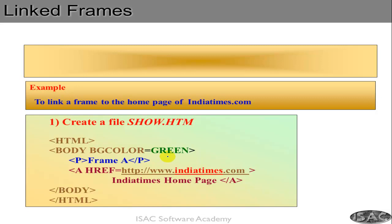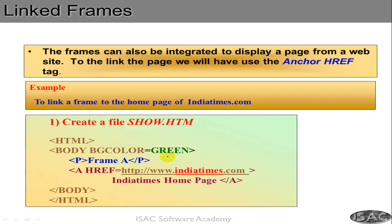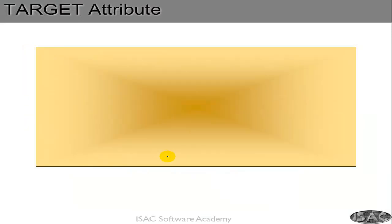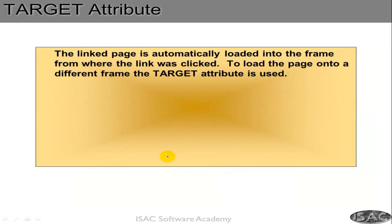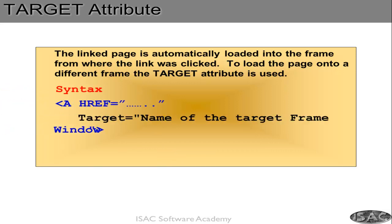You can also link a frame to the home page or some other link. There is another important concept called the target attribute. Generally when you click a link, it loads the target page in the same window where the original link was. But when you have multiple frames, you can specify that a link should open in a particular frame — that is where the target attribute is useful.